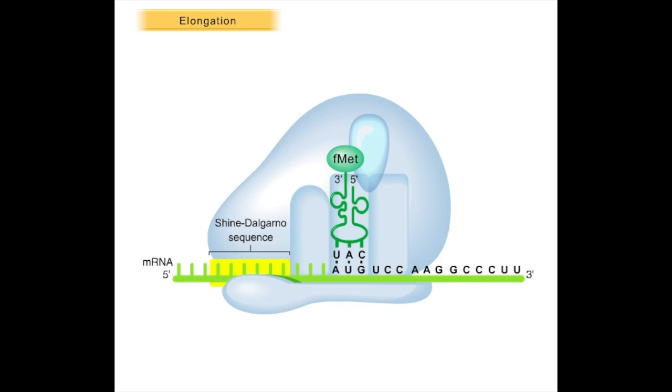binding of a tRNA to the ribosome, formation of a peptide bond between adjacent amino acids, and movement of the ribosome to the next codon. Elongation continues one codon at a time, until a stop codon is reached.